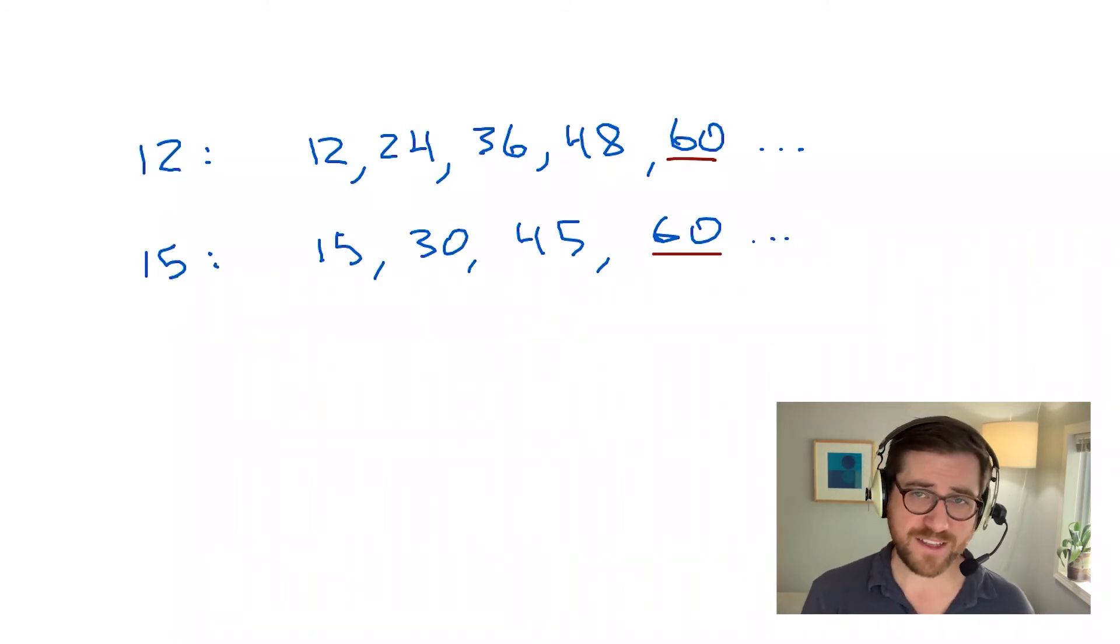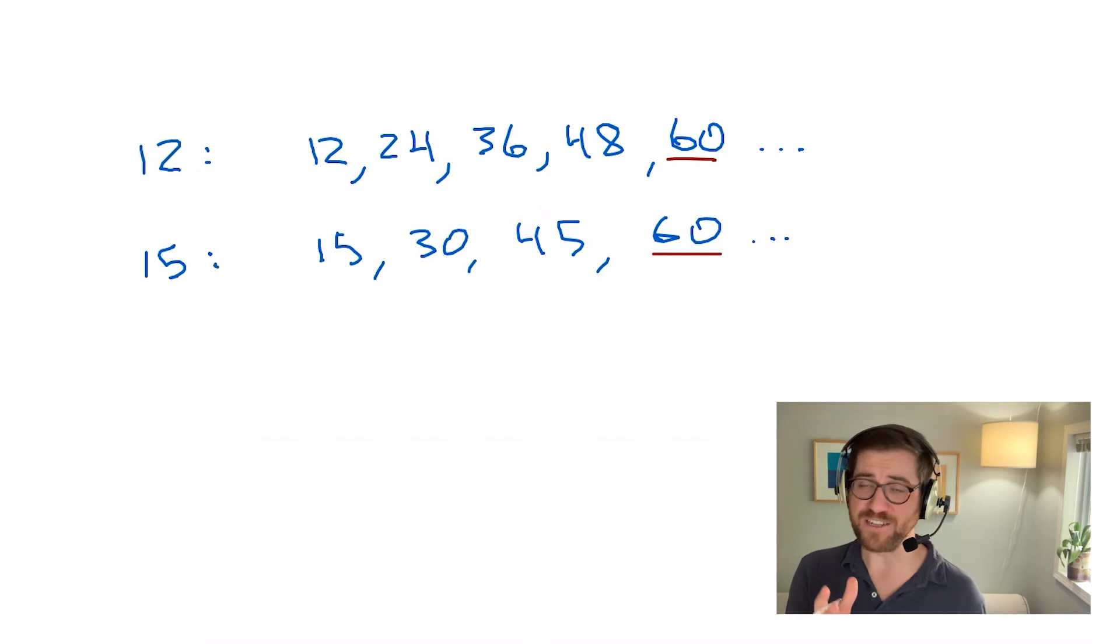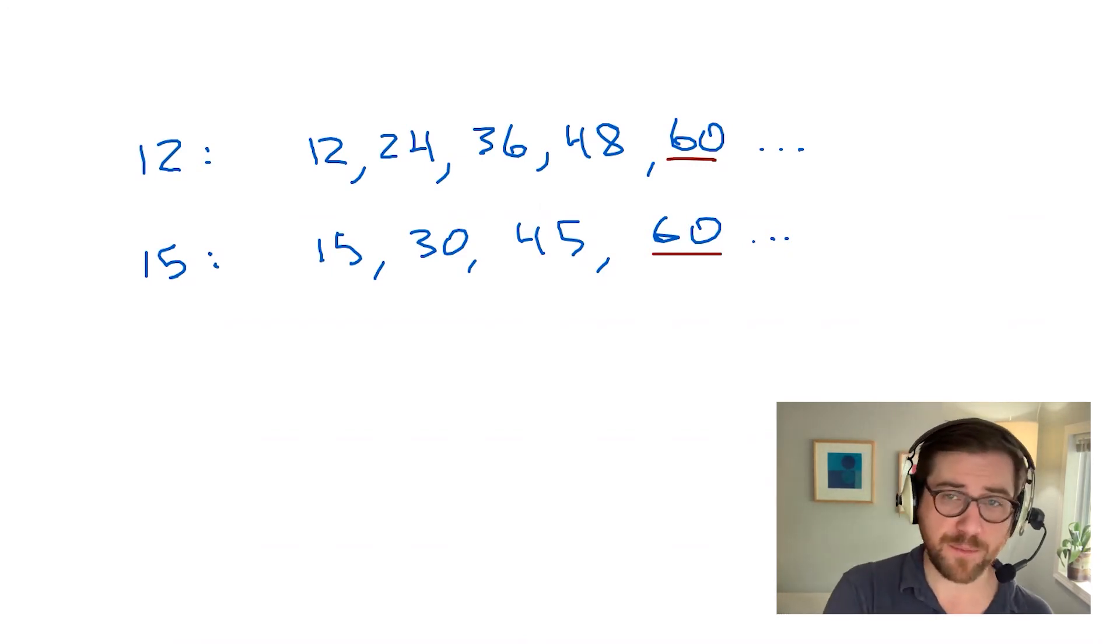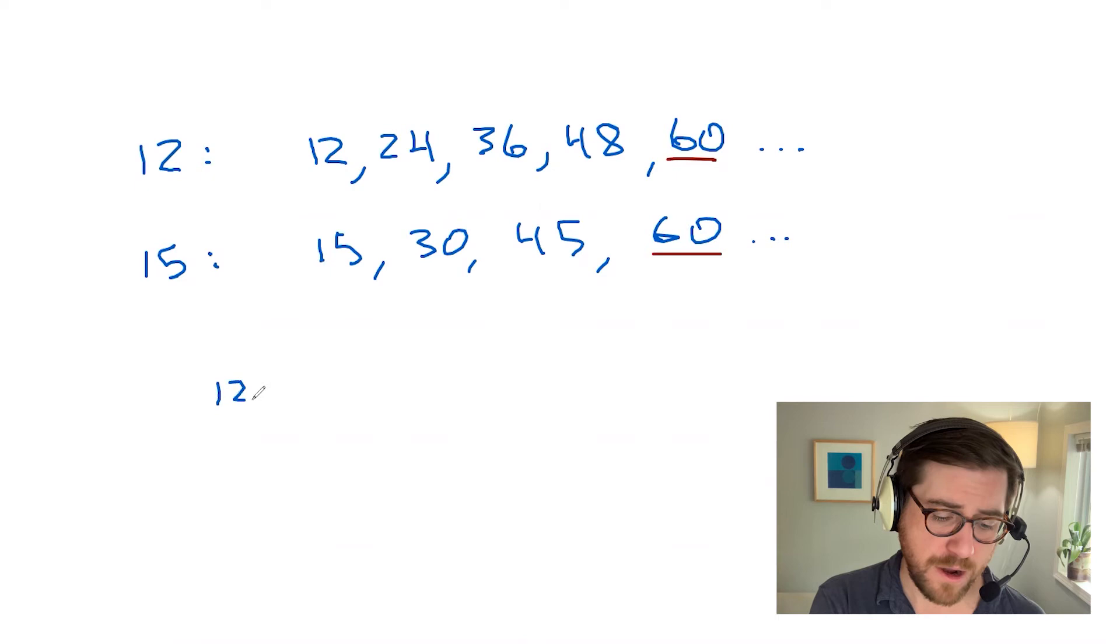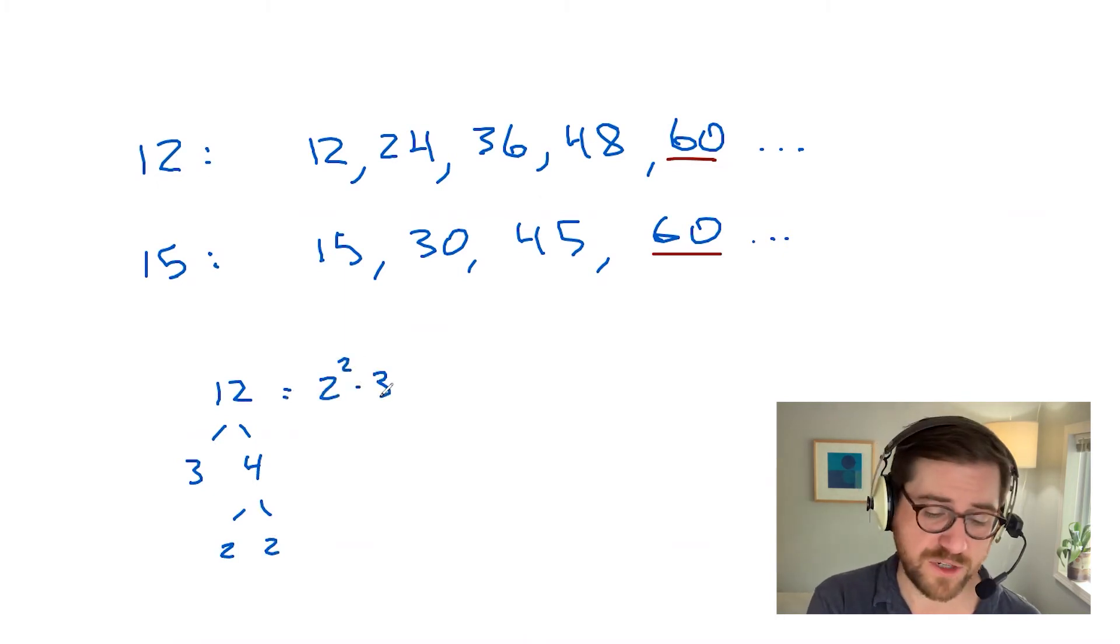A slightly easier way to get at the least common multiple or really any divisibility question is to break your number down into its primes. The primes are the divisibility DNA of the number. They encode all of the divisibility information you would want to need to know. So 12 breaks down into 3 and 4. 4 I can go further into 2 and 2. So I see here 2 squared times 3 is the prime factorization of 12. 15, a little more direct. I just get a 3 and a 5 and there I have it.